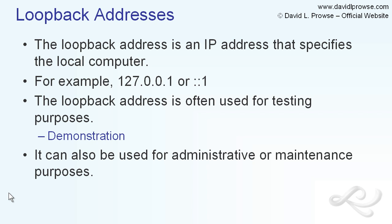Another reason the loopback address is used is to lessen the load on network resources. For example, let's say you were hosting information via HTTP or FTP on your local machine. You would normally connect to the server in the usual manner, whether using a browser or a third-party application. However, you could connect to the server via the local loopback IP address, and that would reduce the network load. Because the IP address is local, any requests made to it by the local machine will stay local and don't travel onto the network. This is an efficient way for an administrator to connect to those resources, because the administrator will often send and receive a lot of data.